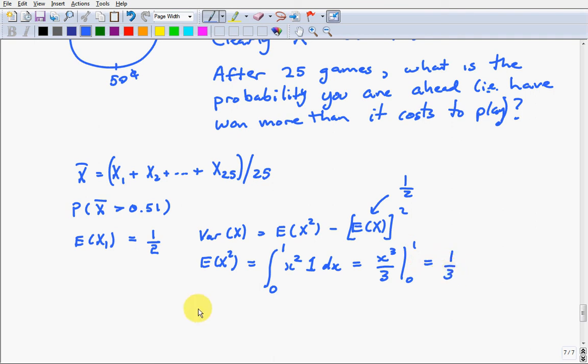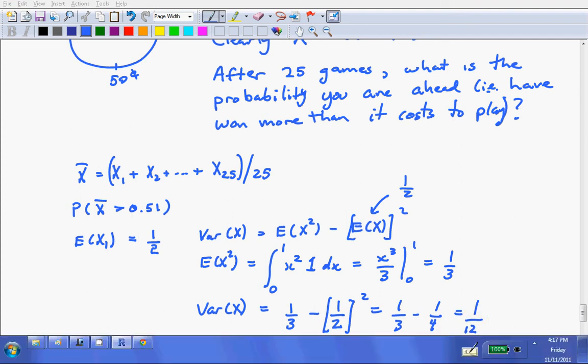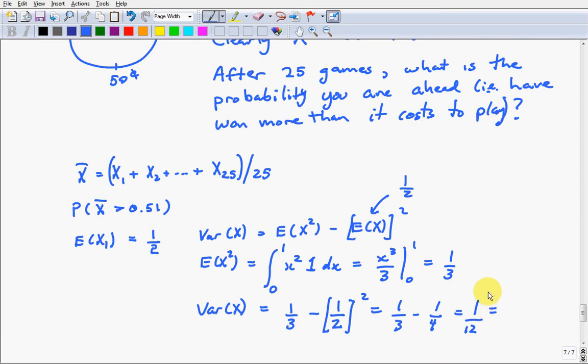So that means that the variance of x will be a third minus one-half, the expected value of x, squared, which is a third minus a quarter, which is one-twelfth. Or we could write that as 0.289 squared. That is, if you take 1 over the square root of 12, you get 0.289. So this is the standard deviation of x of one of these.